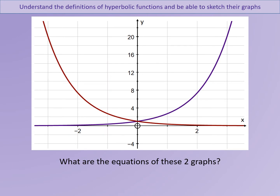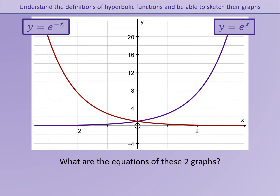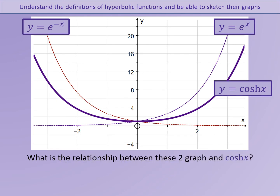Let's consider these two graphs now. We can see that the purple graph is y equals e to the x, and the red graph is a reflection in the y-axis — this is e to the minus x. We can use these two graphs in order to make up the hyperbolic functions. Cosh x is shown here on the same axis. Can you see how cosh x is linked to y equals e to the x and y equals e to the minus x? We can see that for each of the y values, cosh is in a way the average between those two values — in other words, cosh is like the mean of e to the x and e to the minus x.